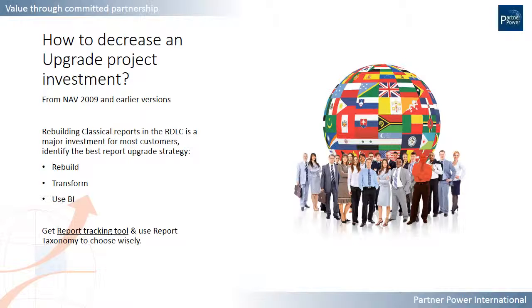Report upgrade strategy is very important while upgrading from NAV 2009 or an earlier version, because classic reports are no longer supported since Microsoft Dynamics NAV 2013, and it is a major investment for most customers to rebuild these. The OneClick Factory report tracking tool and taxonomy helps to make a wise choice on the report upgrade strategy. You may use improved sorting and filtering capabilities of standard Microsoft Dynamics NAV, or you may rebuild reports to provide more visualization and data drill-downs.